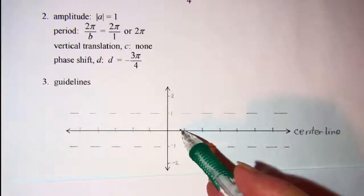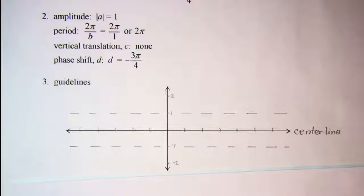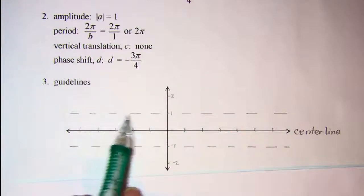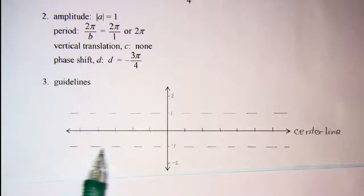And our amplitude is 1, so we're going to go up 1 and down 1 from our center line. This is our guideline for our maximum values, and then this one is the guideline for the minimum values.